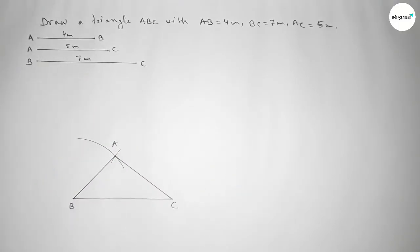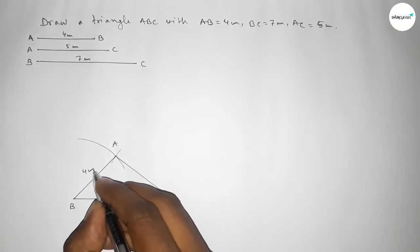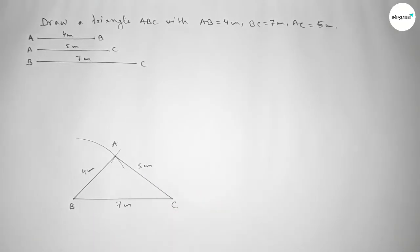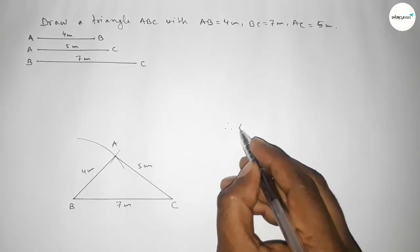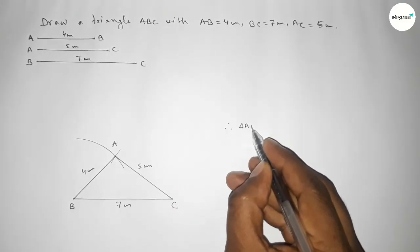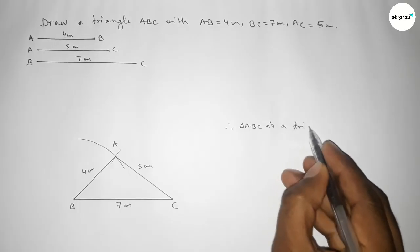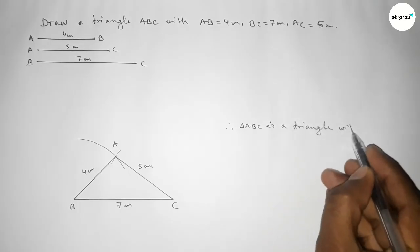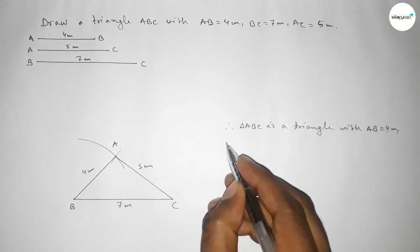Now joining A and C, then joining A and B to get triangle ABC. This side is 7 centimeters, this side is 4 centimeters, and this side is 5 centimeters. Therefore, triangle ABC is complete.